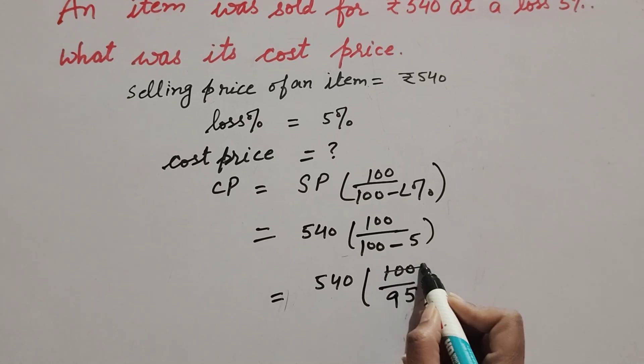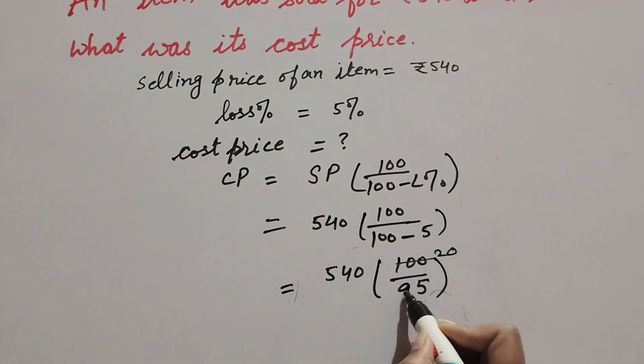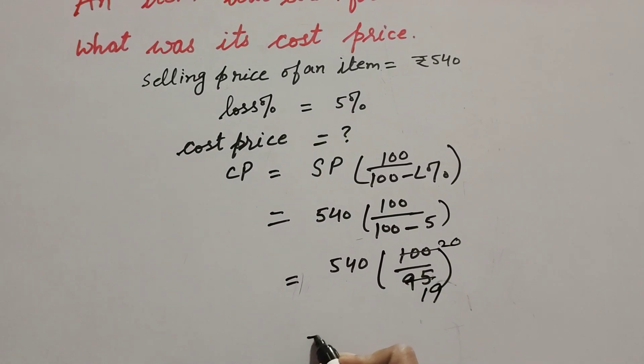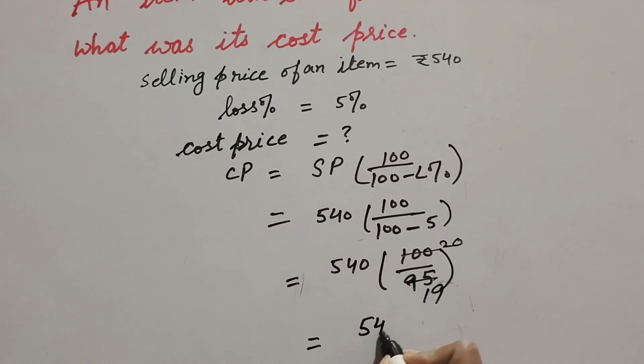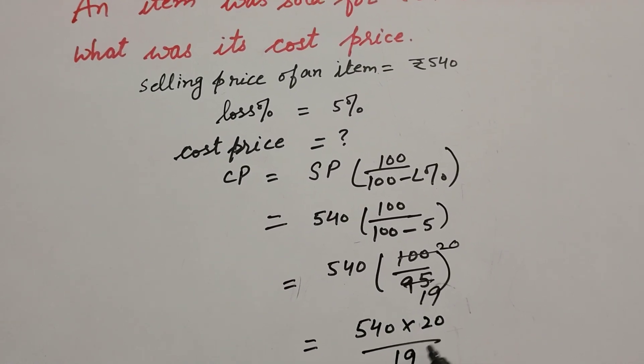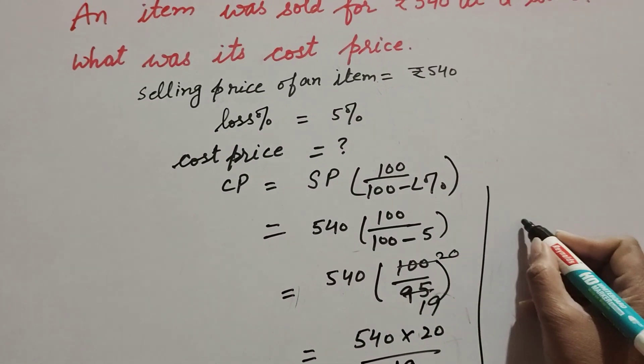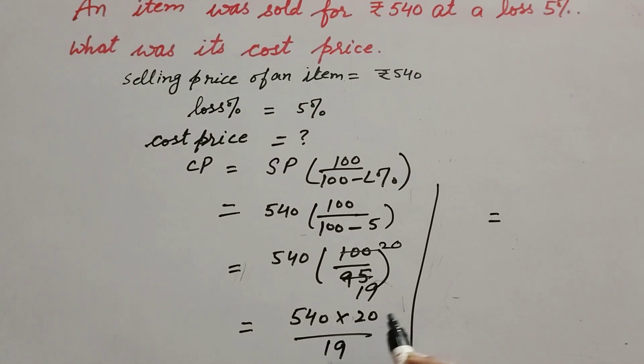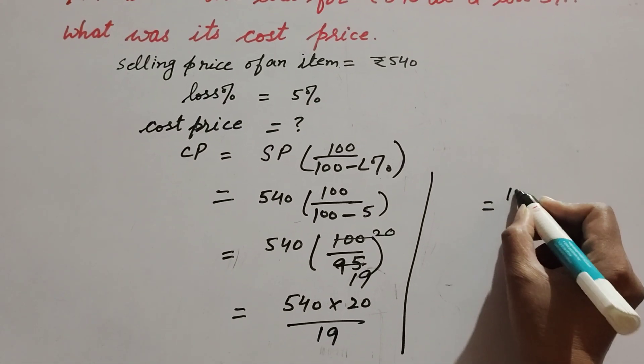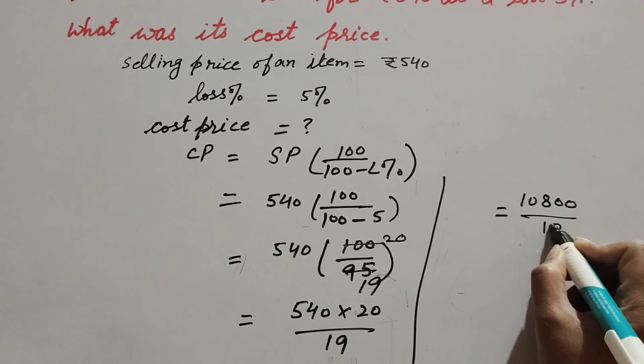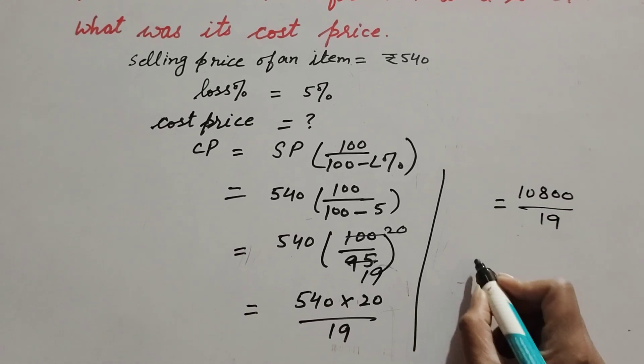cancel them. On the table of 5, 20 5's are 100 and 19 5's are 95. So 540 multiply 20 over 19. 540 multiply by 20 is equal to 10800 over 19, it is equal to